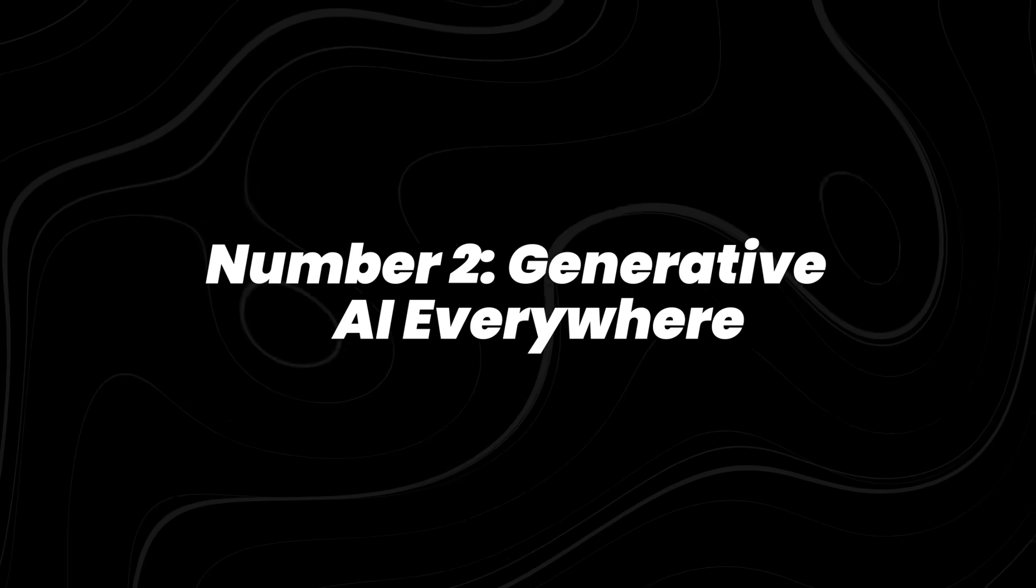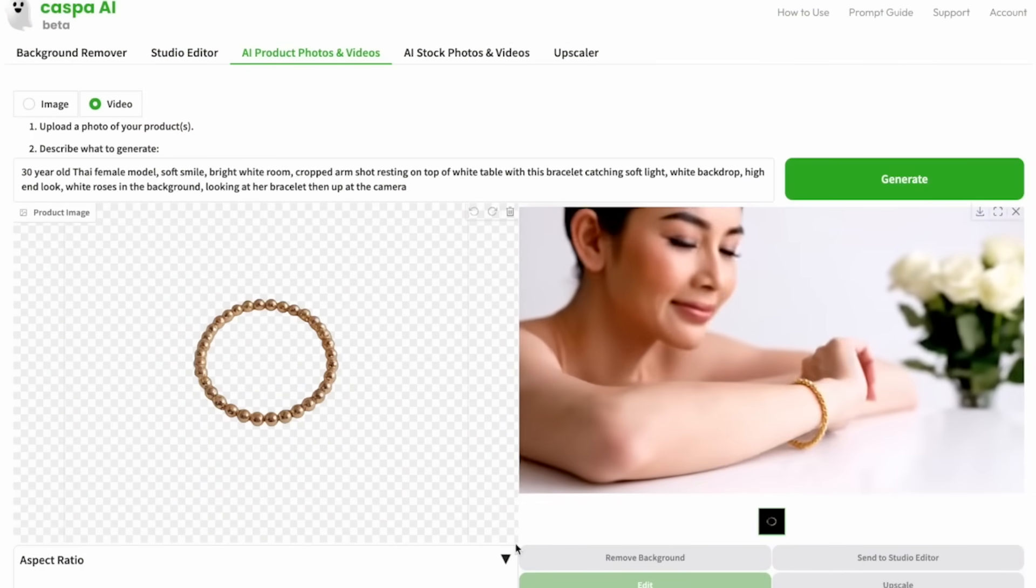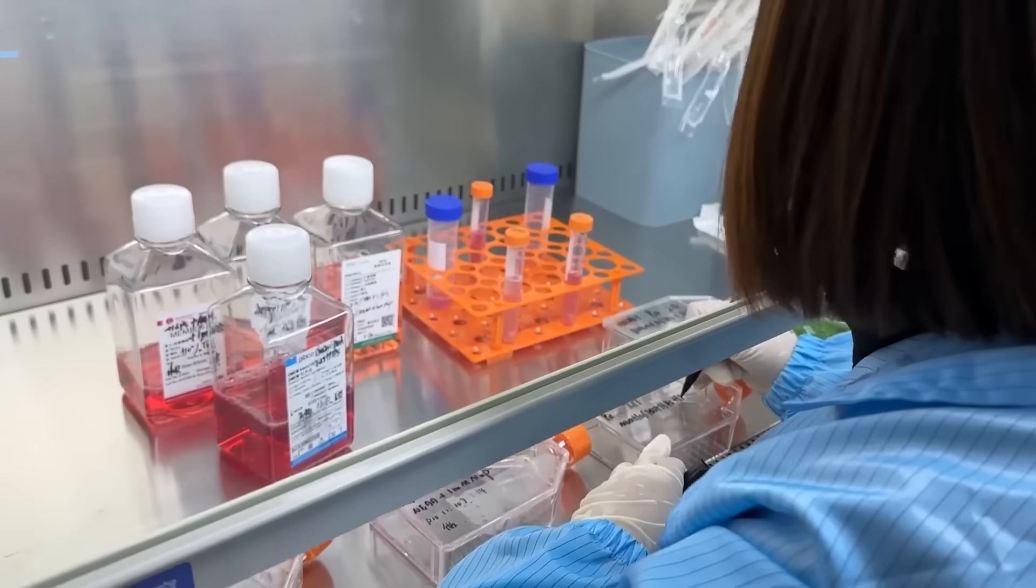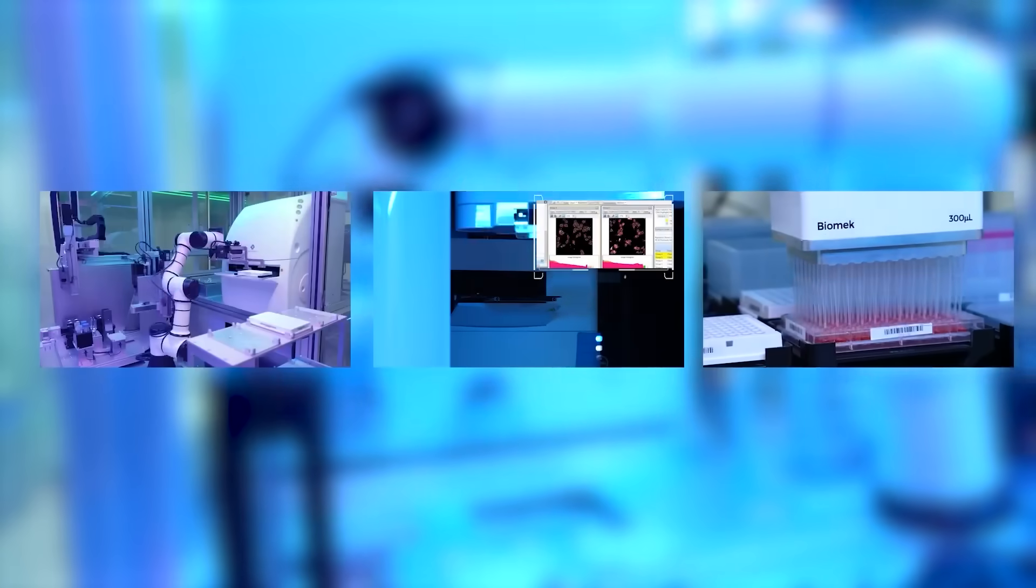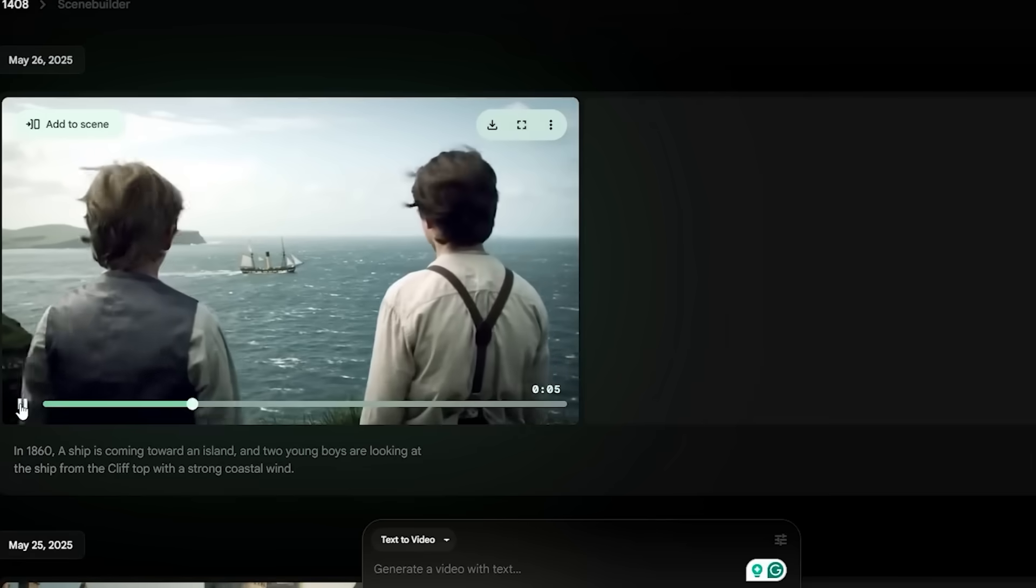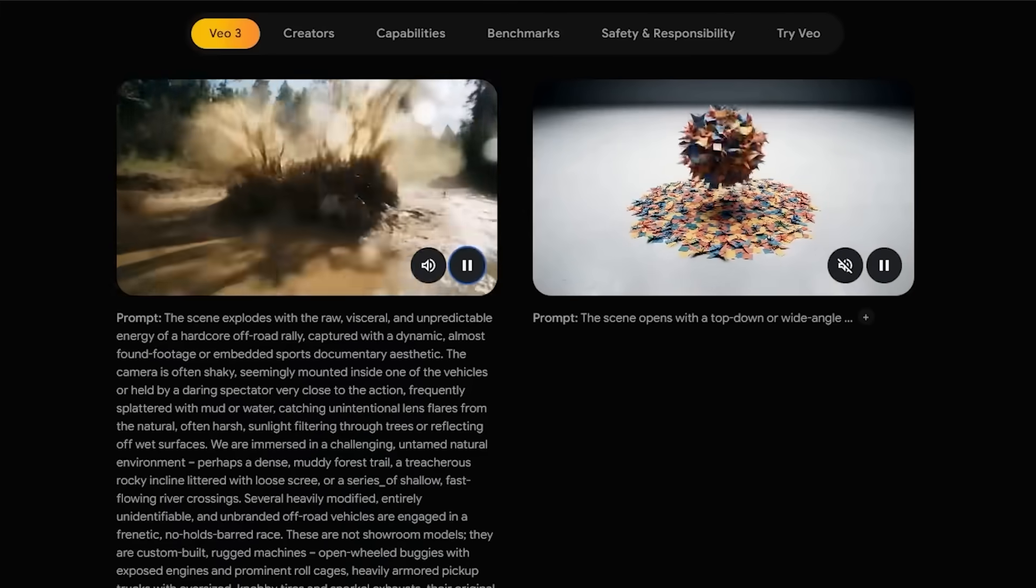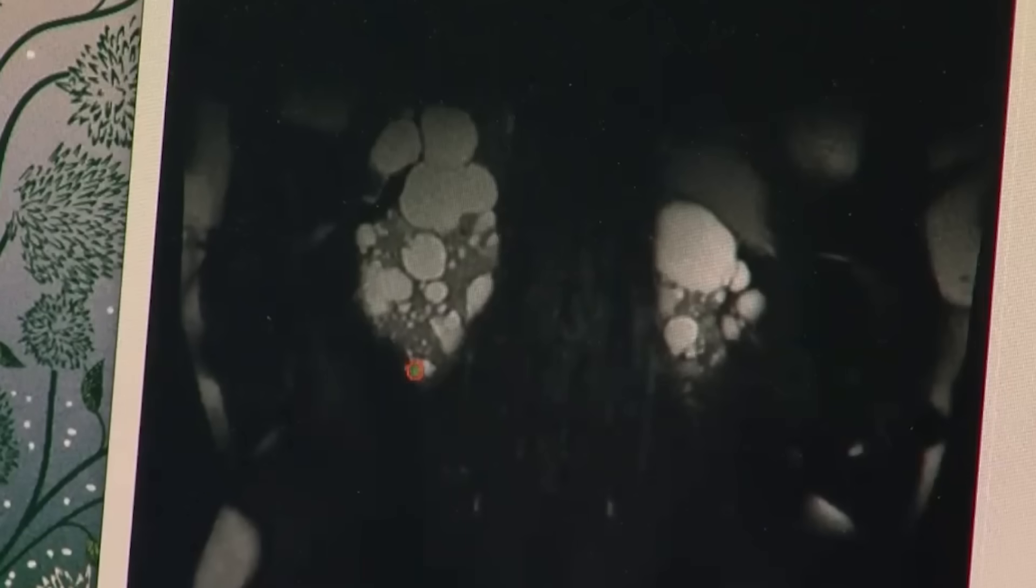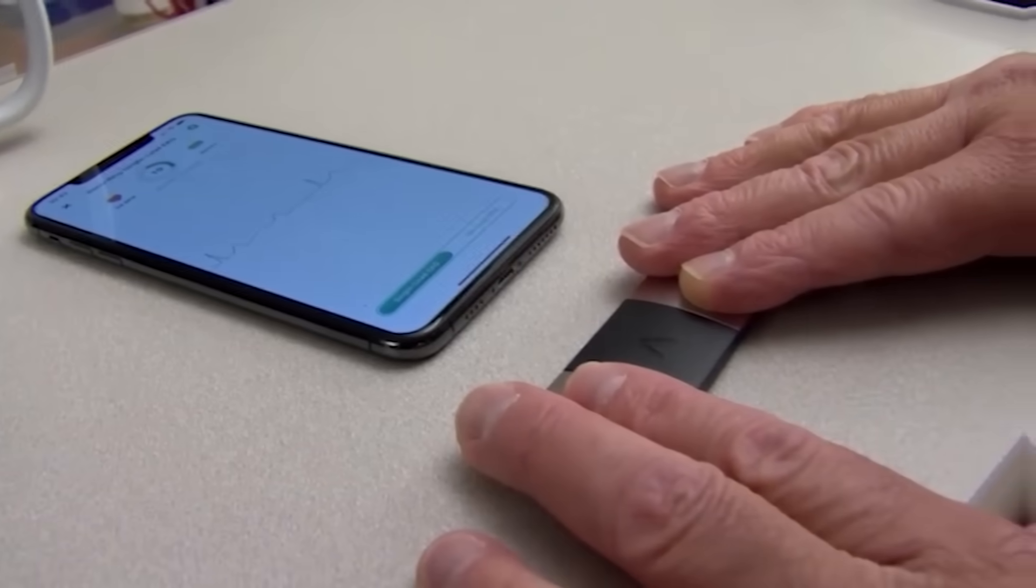Number 2, generative AI everywhere. Generative AI in 2025 has expanded far beyond text and images. It's now being used to compose music, generate film sequences, and even design potential drug compounds. Researchers have recently introduced models capable of predicting chemical reactions with high physical accuracy, a step that could accelerate material science and medicine. In entertainment, production teams are already relying on AI to create visual sequences that once took weeks. Investment reflects the momentum. Global spending on generative AI rose nearly 19% in the past year, with adoption spreading across healthcare, media, and enterprise systems.